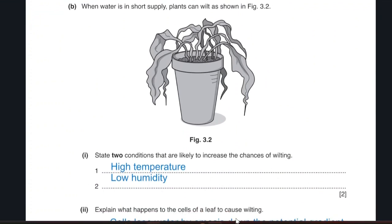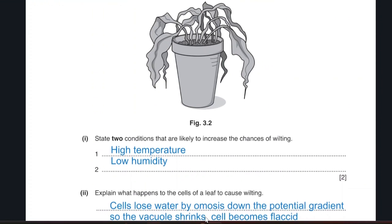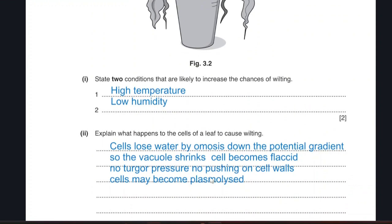Explain what happens to the cells of the leaves to cause wilting pressure. Take care. Here, I'm talking about the cells of the leaf. The cells itself, not the transpiration process as a whole. It loses water by osmosis down the potential gradient. The vacuole will shrink. It will become flaccid. There is no turgor pressure to push on the cell walls. It also may become plasmolyzed, where the cell membrane will tear off away from the cell wall.